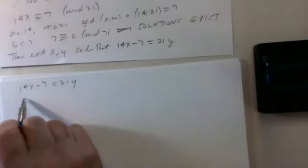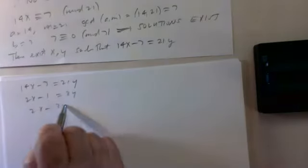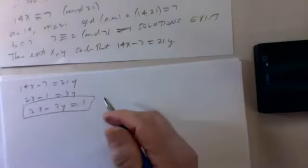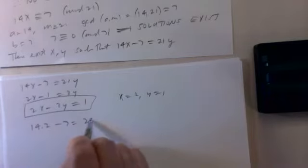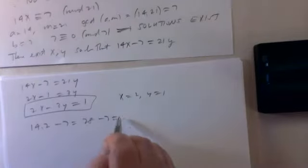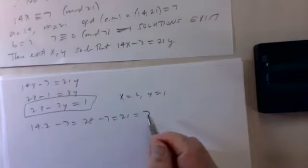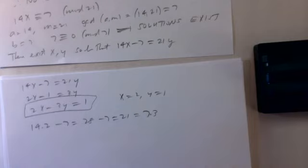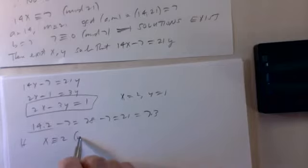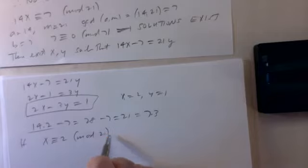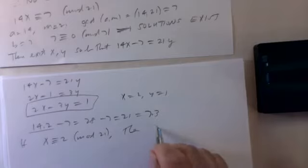Let's just do it. We need 14x − 7 = 21y. If you divide by 7, you get 2x − 1 = 3y, or 2x − 3y = 1. It's easy to find a solution: x = 2, y = 1 is a solution. 14 times 2 minus 7 is 21, which is divisible by 7. So x = 2 is a solution, and it follows that any x congruent to 2 mod 21 is also a solution.